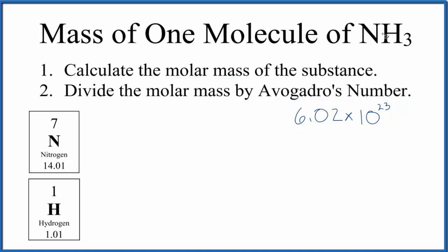We go to the periodic table. For ammonia, we have one nitrogen atom, so we have 14.01 grams per mole, plus we have three hydrogen atoms. Hydrogen on the periodic table is 1.01. We have three of those.